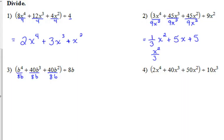Okay, let's look at number 3. Dividing everything by 8b. So, coefficient-wise, b to the fourth, its coefficient is 1. We can't divide 1 by 8, so we just leave it written as 1 over 8. b to the fourth over b,